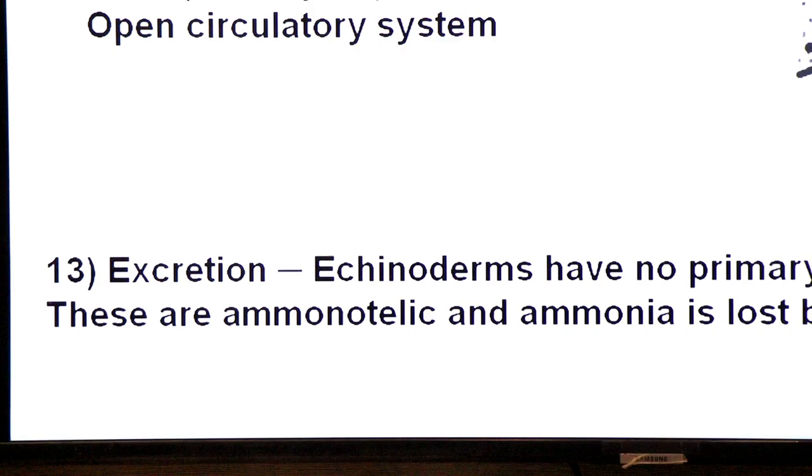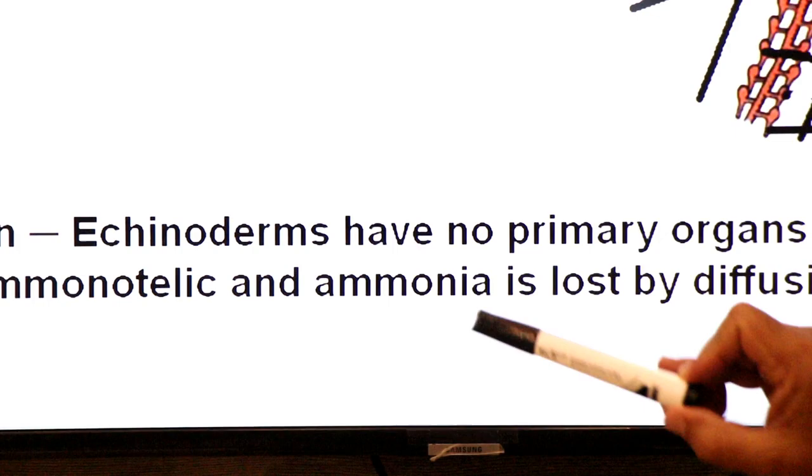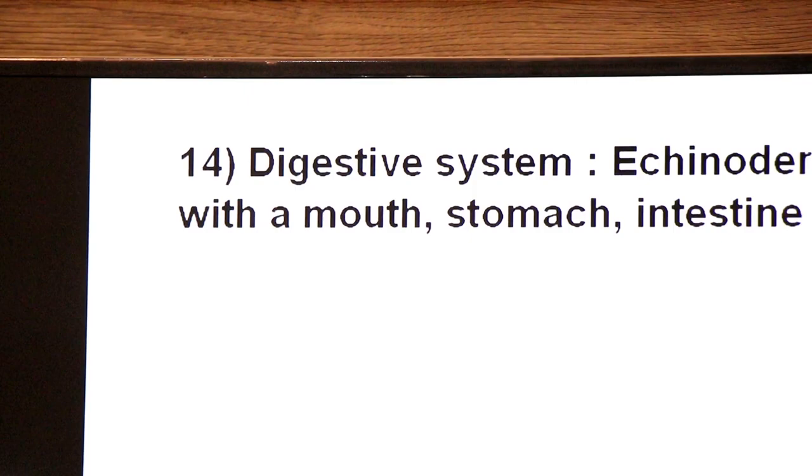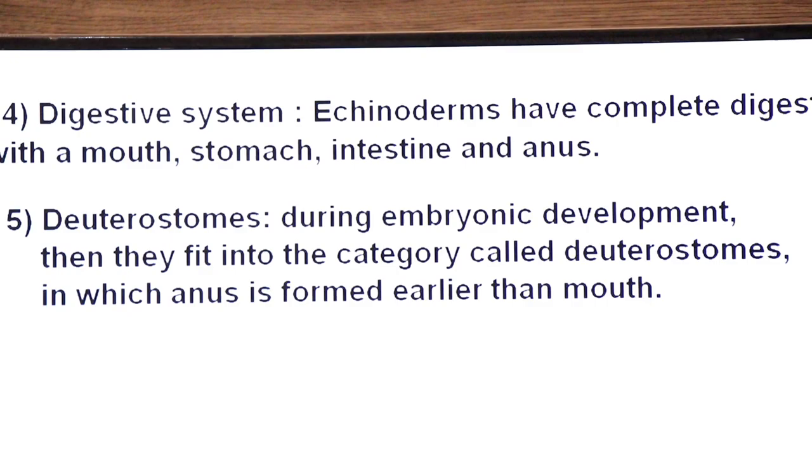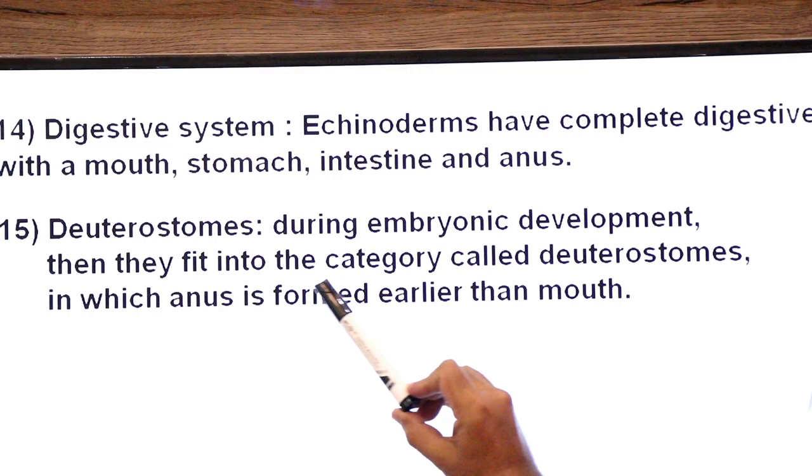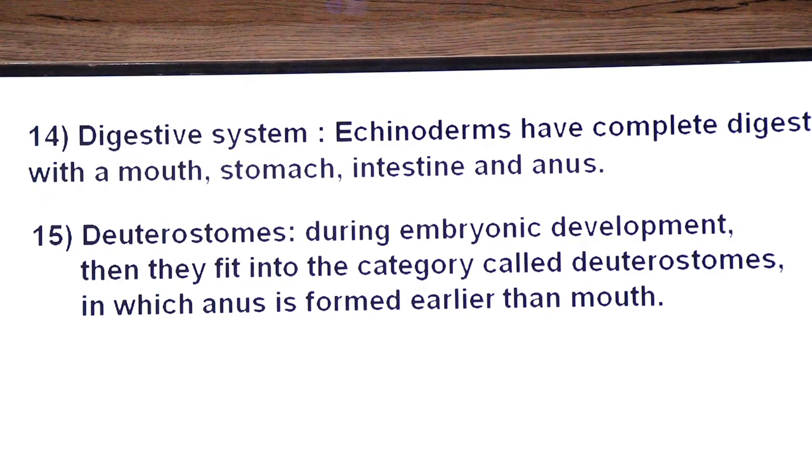Excretory organs are also not found in them. Echinoderms have no primary organs for excretion, and their excretion occurs through gills. These are ammonotelic and ammonia is lost by diffusion through their gills. Their digestive system is complete with two openings. Echinoderms have complete digestive system with a mouth, stomach, intestine, and anus. They are deuterostomes. During embryonic development they fit into a category called deuterostomes in which anus is formed earlier than the mouth. I have taught about blastopore.